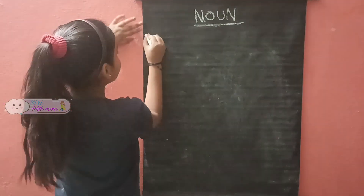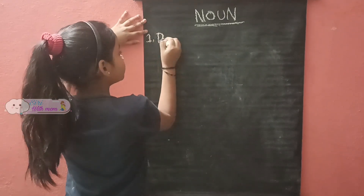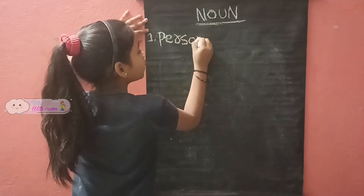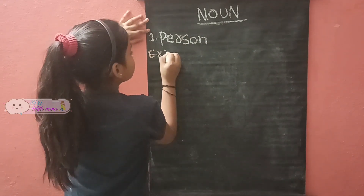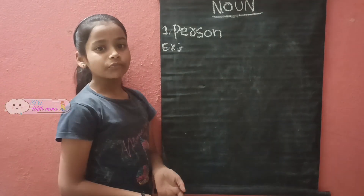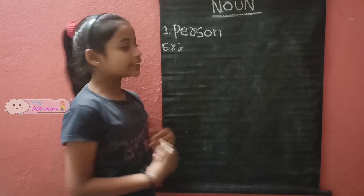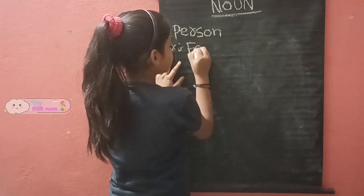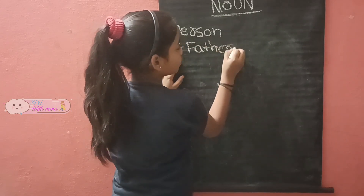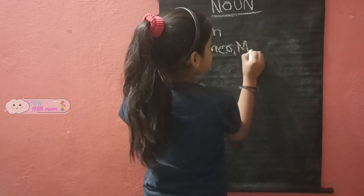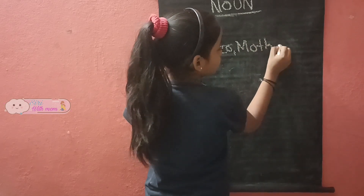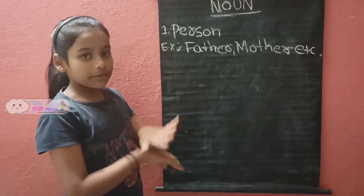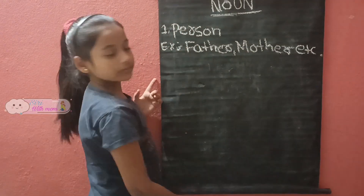First one: person. Person example — person means father, mother, brother, sister. They are persons. Father, mother, brother, sister, etc.